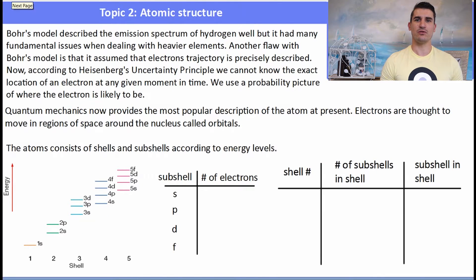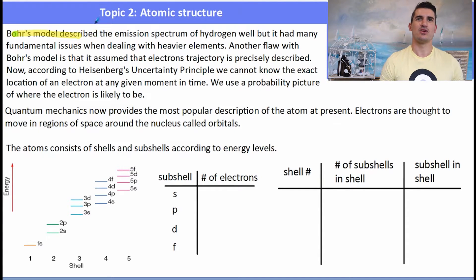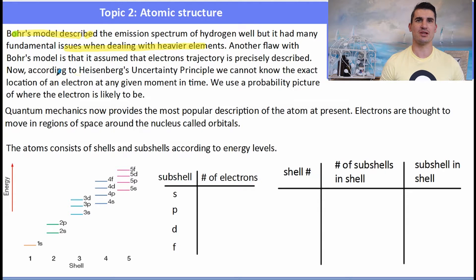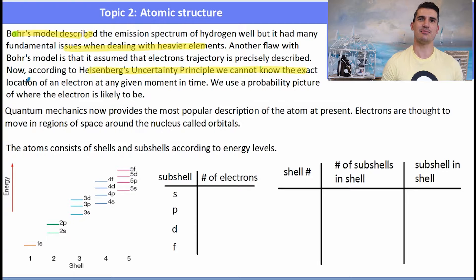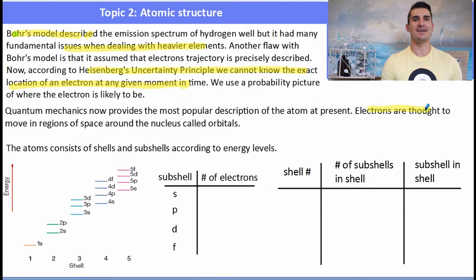Bohr's model worked well for describing small atoms like hydrogen and their emission spectra, but had many flaws with heavier elements. Now we use a probability model — we don't know exactly where an electron will be, but we can predict approximately where we might find it. The quantum mechanical model is now the most accurate description for writing electron configurations.